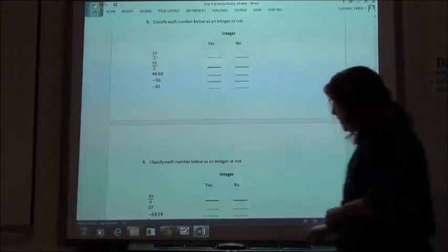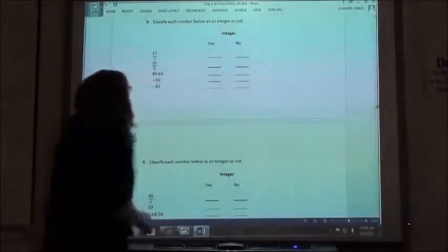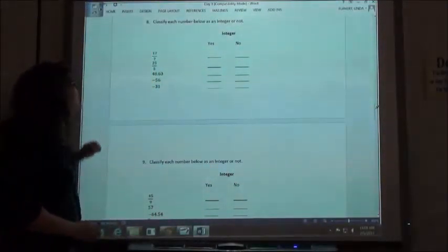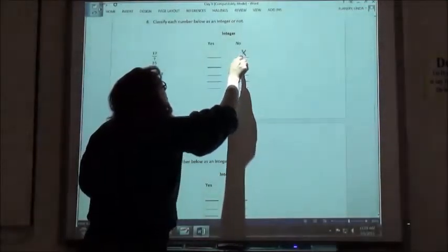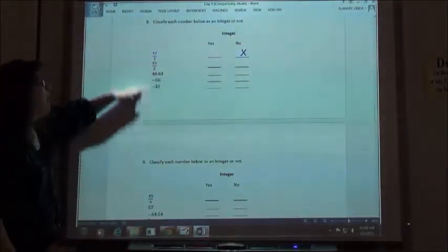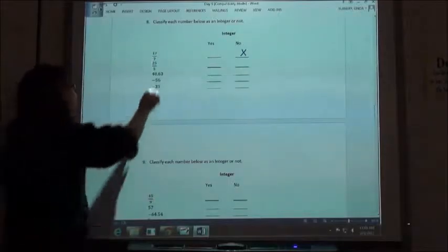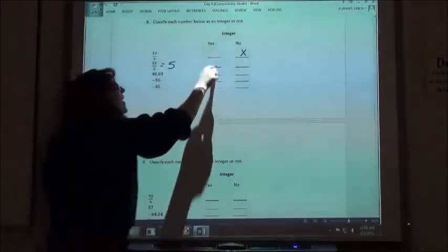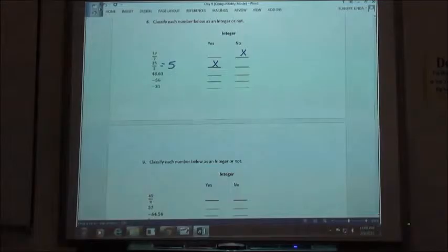Number 8. If I have 17 sevenths, 7 does not divide into 17 evenly, not going to be an integer. However, 5 divides into 25, 5 whole times. So yes, that does simplify into an integer.